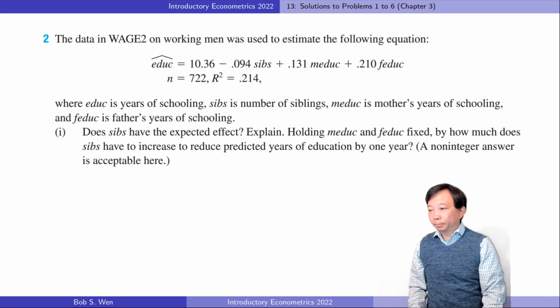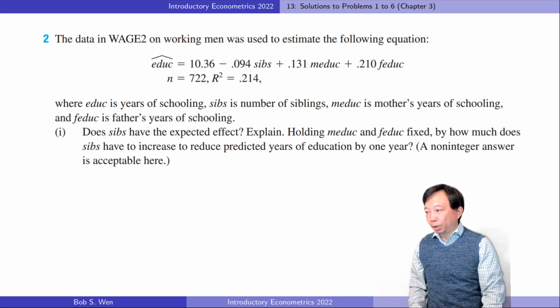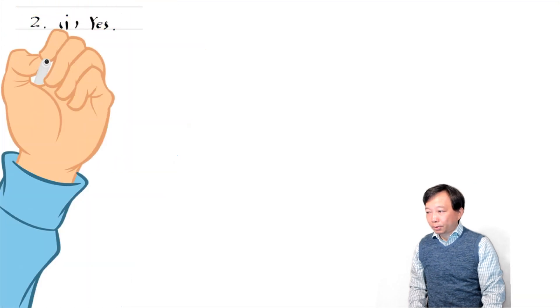Let's do the second problem. We use the data set wage 2 and run a multiple regression of education on the number of siblings, mother's education level and father's education level. For the first question, the estimated coefficient on the number of siblings is negative, suggesting that more brothers or sisters lead to fewer years of schooling. The more children sharing family resources, the less spending on education for each child. The sign is expected.